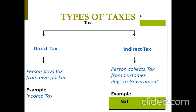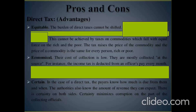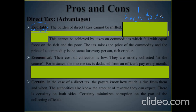Pros and cons means advantages and disadvantages. We will start with direct taxes. In case of direct tax, the first advantage is equitability. In society you have rich people and poor people. With the help of direct tax, the government collects more tax from the rich persons, and the poor will not pay income tax at all. Do you know how much percentage of the population is paying income tax in our country, out of 135 crore people?